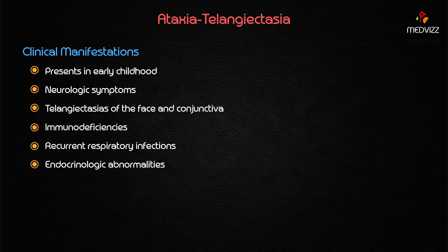Various immune deficiencies lead to recurrent respiratory infections. The triad to remember covers all three systems: neurologic — cerebellar ataxia; vascular — telangiectasia of the face and conjunctiva; and immune — various immunodeficiencies, most prominently presenting as recurrent respiratory infections.